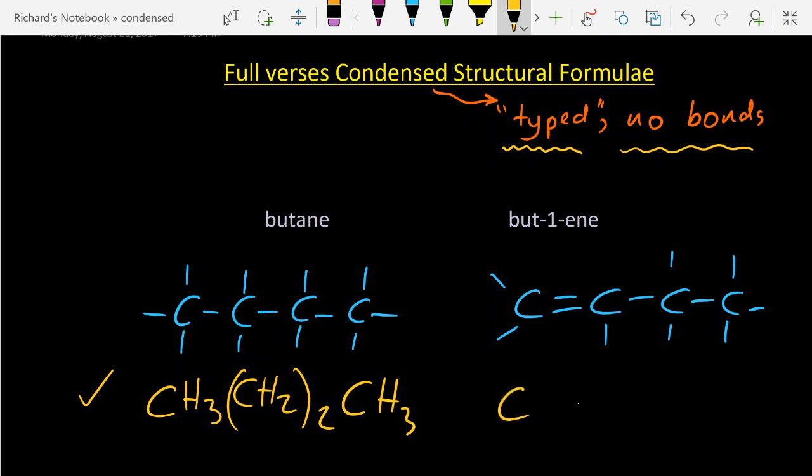With but-1-ene I've got CH2 CH CH2 and CH3. So my advice is to write down the full so-called structural formula and then it's easier to do the condensed one.